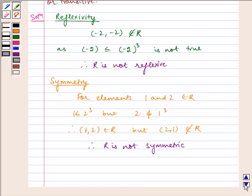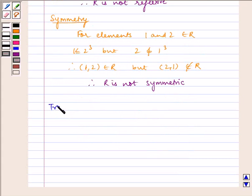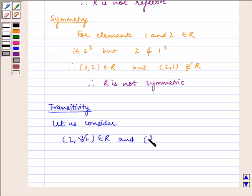Now let us check for transitivity. Let us consider (2, ³√2) belongs to R and (³√2, 1.2) belongs to R. Therefore, we have 2 is less than or equal to (³√2)³, which is true.